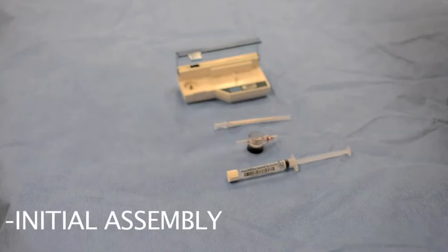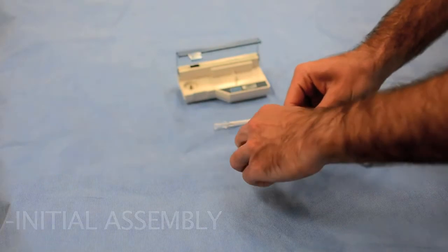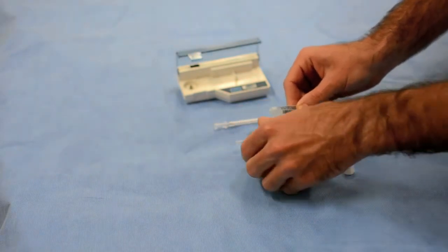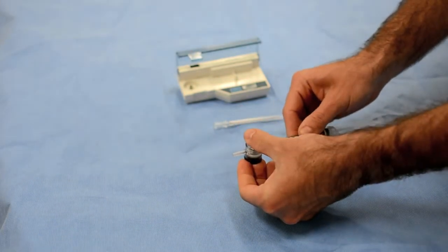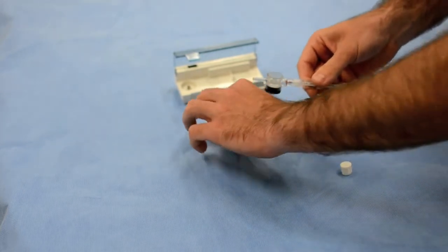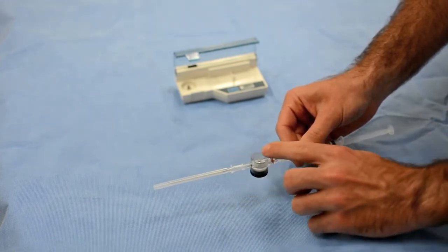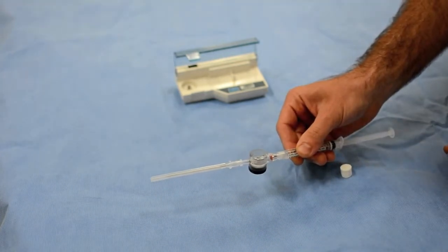The next step is the assembly of the disposable components. Start with your syringe. Maintain sterility of the end of the syringe. Place the coupler onto the syringe, followed by the side port needle. Again, maintain sterility of the needle. Do not contaminate the fluid pathway as of yet.